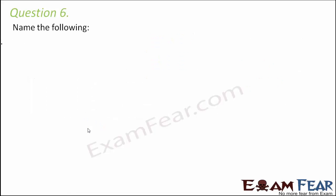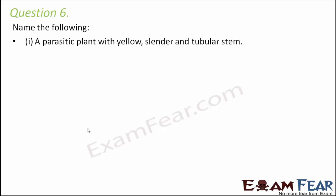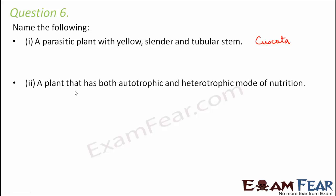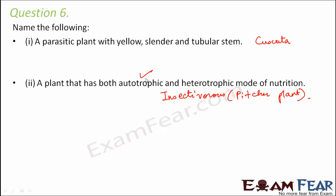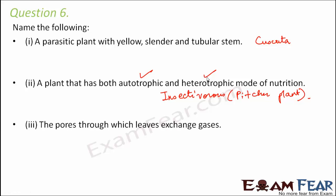Question number six: Name the following. A parasitic plant with yellow, slender, and tubular stem — that is cuscuta; they have very thin, almost hair-like stems and are yellow in color due to lack of chlorophyll. A plant that has both autotrophic and heterotrophic modes of nutrition — insectivorous plants like the pitcher plant; they contain chlorophyll so they can prepare their own food, but they also eat insects, making them heterotrophic too. The pores through which leaves exchange gases are called stomata.